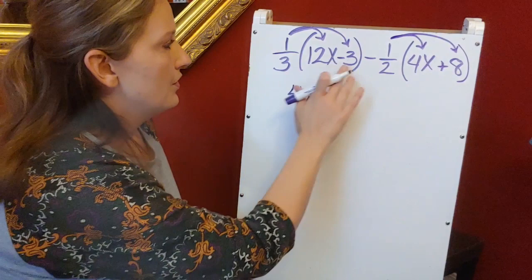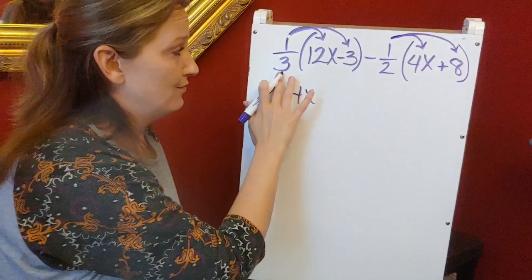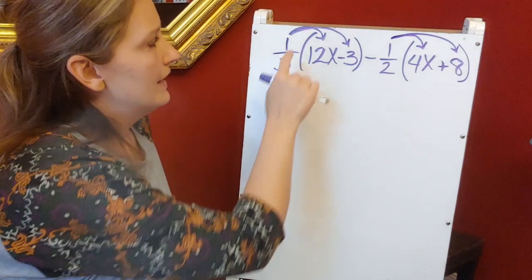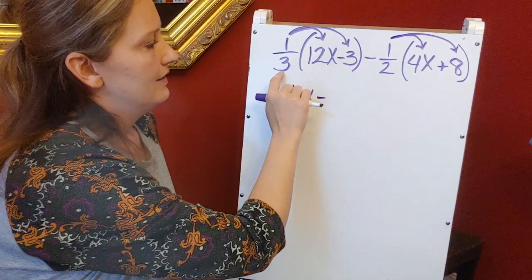1 third times the negative 3. I know this is going to be a negative answer because it's a positive number times the negative answer. I'm going to go ahead and put my minus down here just so I don't forget it. 1 times 3 is 3. 3 divided by 3 is 1.